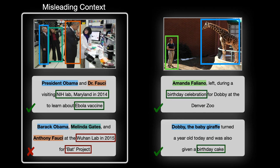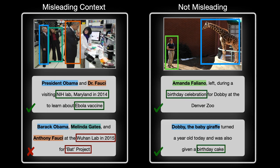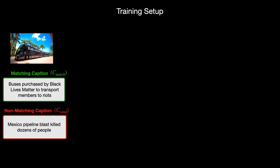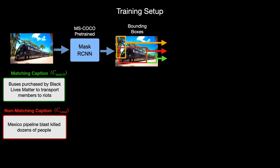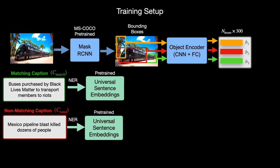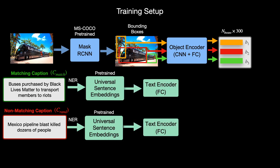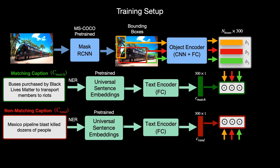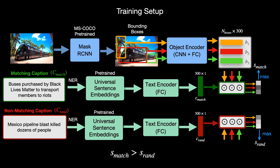However, if both captions refer to different objects in the image, then it is not out-of-context. We first use Mask-RCNN to detect objects in the image. Each object region is then encoded with a CNN to generate a fixed-size embedding. In parallel, we encode a matching and non-matching caption. Both visual and text embeddings are then combined using dot products, and a max operation is applied to obtain scores for each image-caption pair.